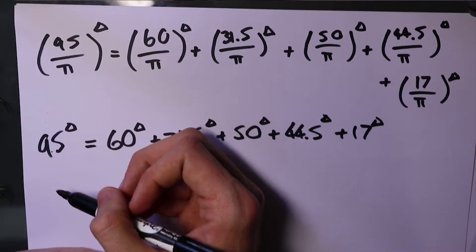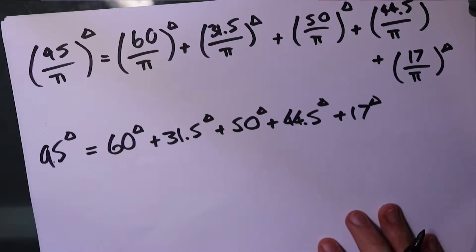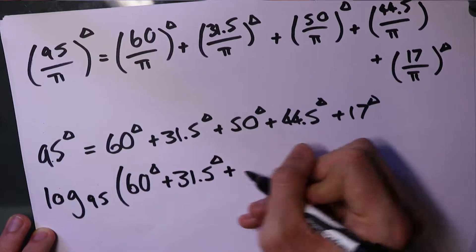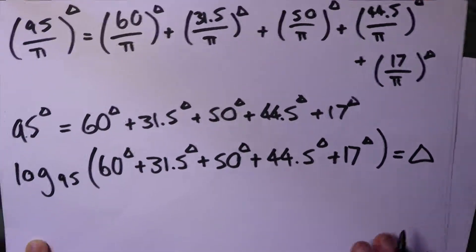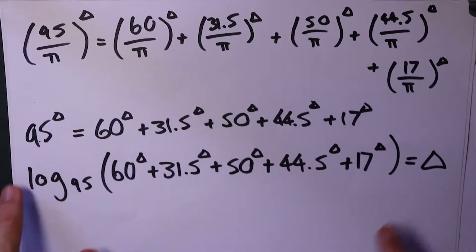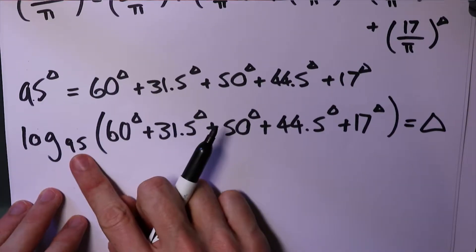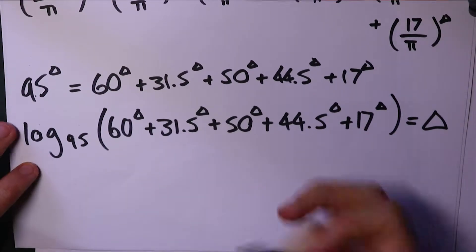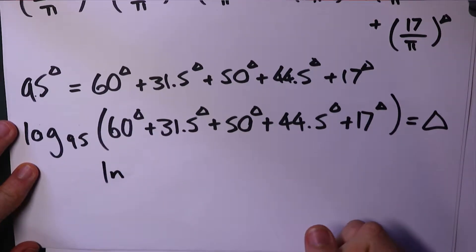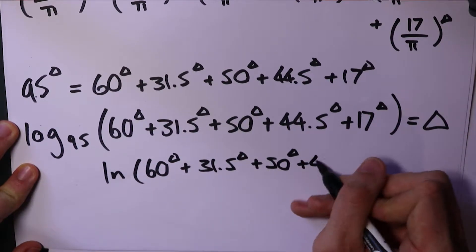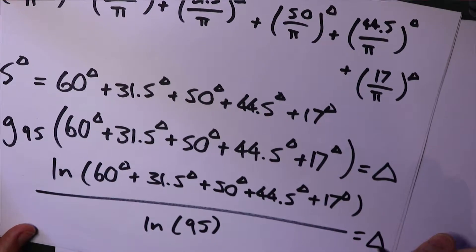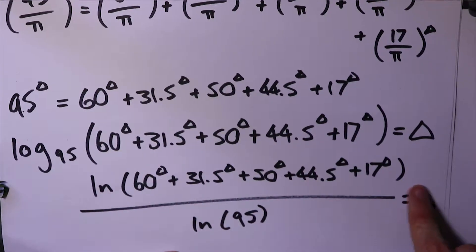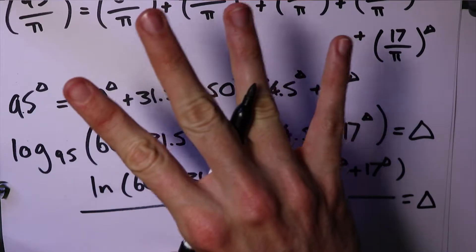And now I'm just going to represent this in logarithmic form. And now because our calculators can't do log 95, we just need to make it log with base 10 or log with base E. So I'll do log with base E, which is represented with that. So again, we haven't done any calculations or anything, we're just representing it in a way that our calculator can deal with.